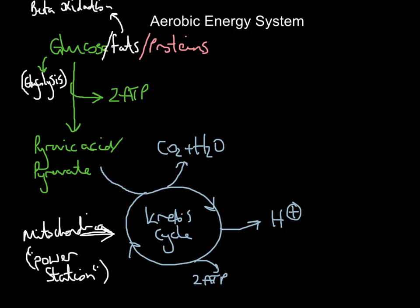What's going to happen to these hydrogen atoms? They then enter the third and final stage of the aerobic system: something called the electron transport chain, which again takes place in the mitochondria. So glycolysis doesn't take place in the mitochondria, but Krebs and the electron transport chain both take place in the mitochondria.